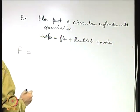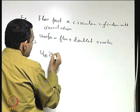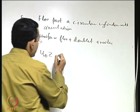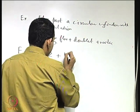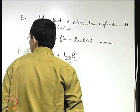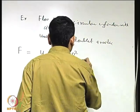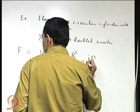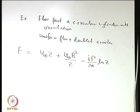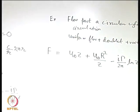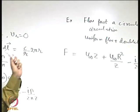How do we write F? For uniform flow, it is u∞z. For the doublet term in flow past a circular cylinder, the doublet strength is u∞R², where R is the radius of the cylinder. So F = u∞z + u∞R²/z − iγ/(2π) ln z. We need to verify that r = R gives ψ = 0.